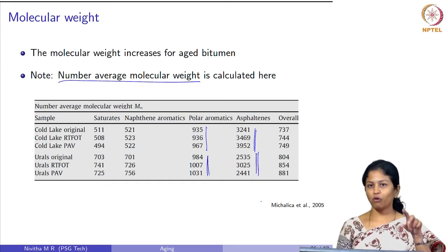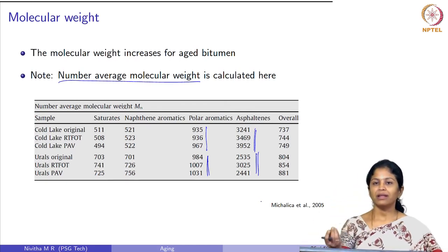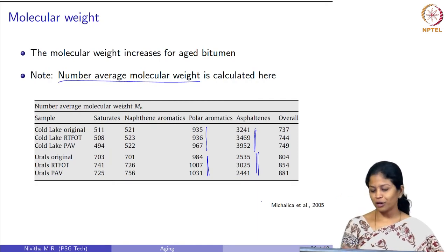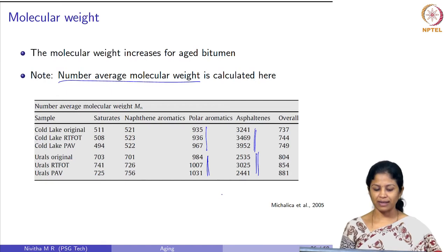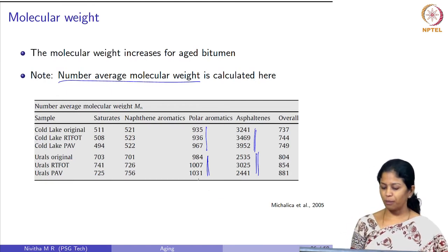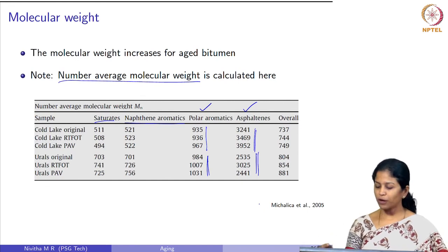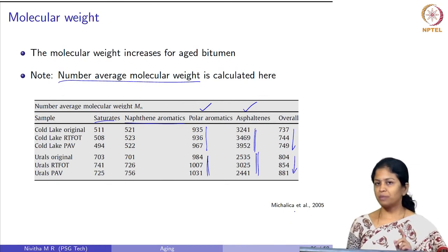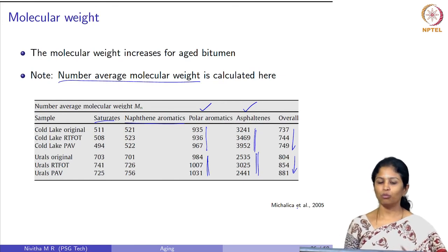Polar aromatics and asphaltenes are bigger molecules containing many sites where polar compounds can attach. Because of this, oxidation products are mostly formed in the polar aromatics and asphaltene fractions compared to saturates and naphthene aromatics. Overall, there is an increment in molecular weight for both bitumen types, and considering weight average molecular weight the increase would be even more predominant.